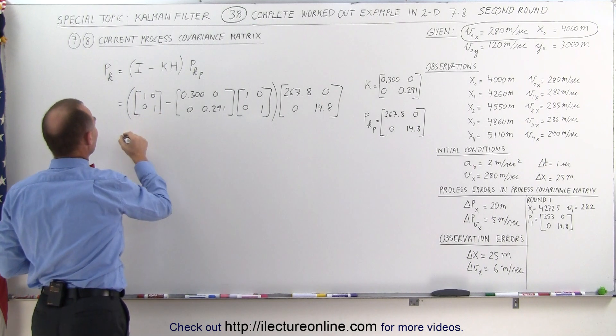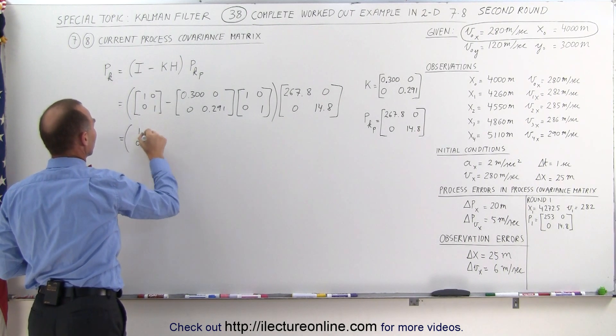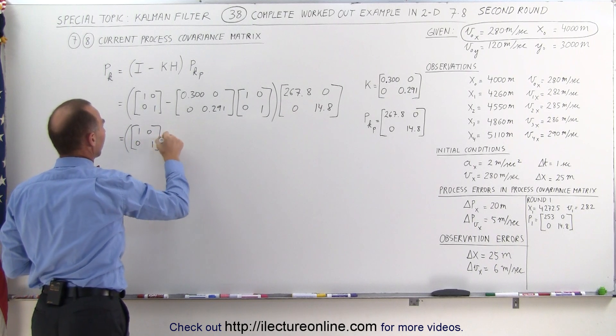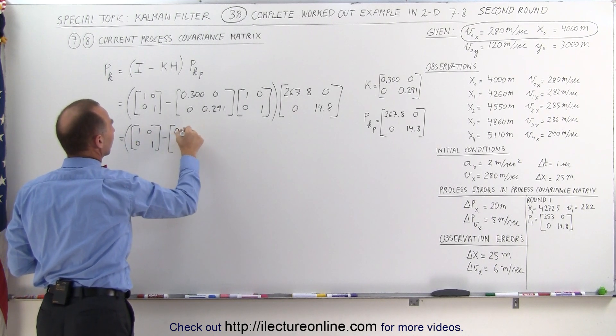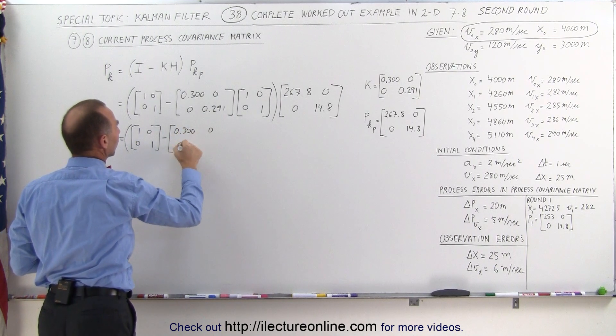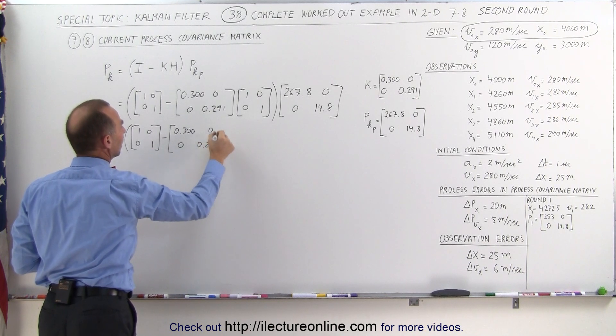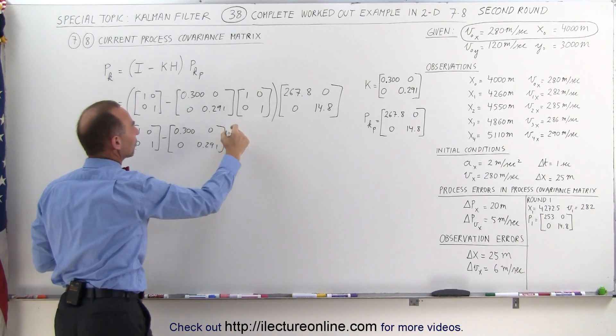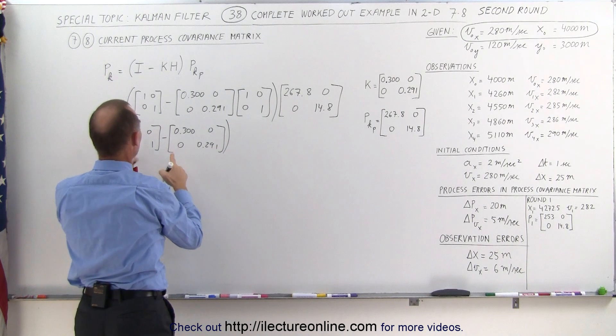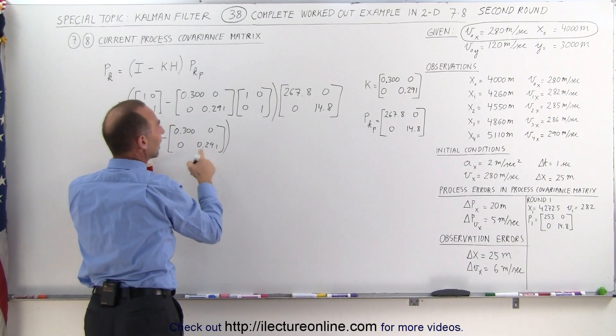This then simply becomes 1, 1, 0, 0 minus 0.300, 0.291, because when you multiply times the identity matrix, you get the same matrix back, so simply 1 minus this and 1 minus that.